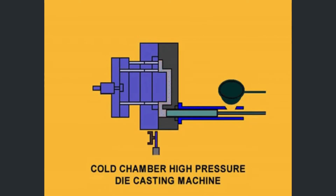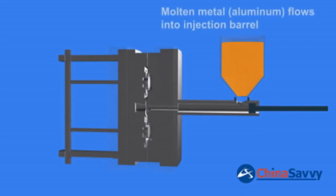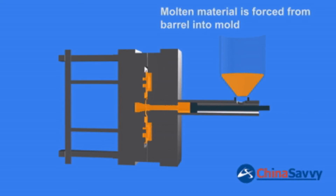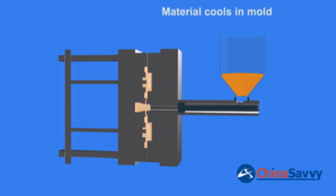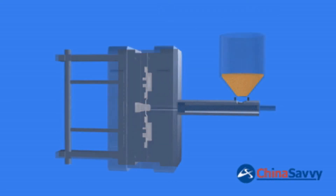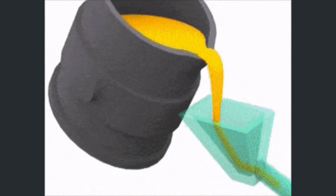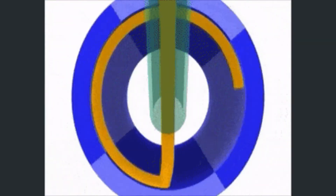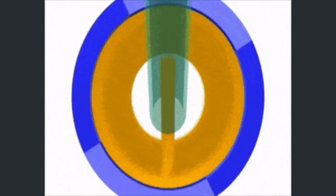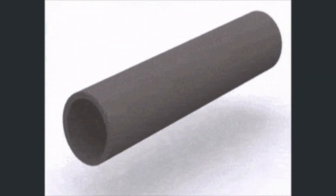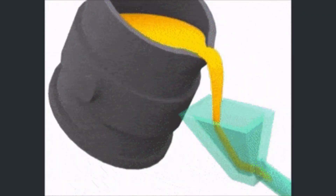Applications of pressure die casting include crankcase valve bodies and parts of injection pumps. The third type of permanent mold casting is centrifugal casting, which is a process in which molds are rotated at high speed, creating centrifugal force that forces the molten metal outwards towards the die.